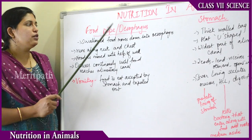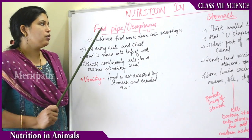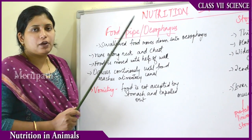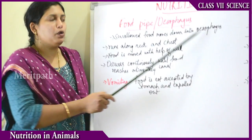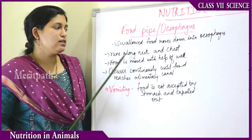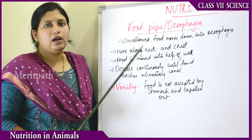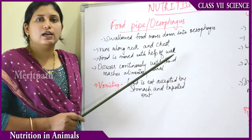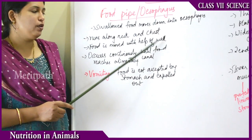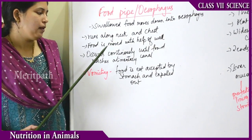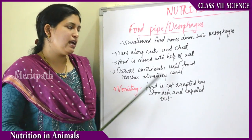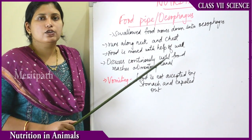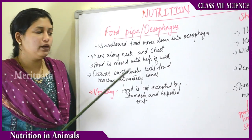From the mouth cavity, the food moves into the food pipe, also known as the esophagus. The swallowed food moves down from the tongue through the esophagus. The esophagus runs along the neck up to the chest, and the food is moved by the walls of the esophagus. This movement occurs continuously until the food reaches the alimentary canal.